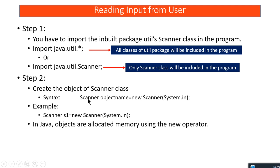After importing, the next step is to create an object of the Scanner class. You write: Scanner objectName = new Scanner(System.in). In C++ you simply write the class name and object name, but in Java every new allocation is done using the new operator. Just as we use System.out for output, we use System.in for input.